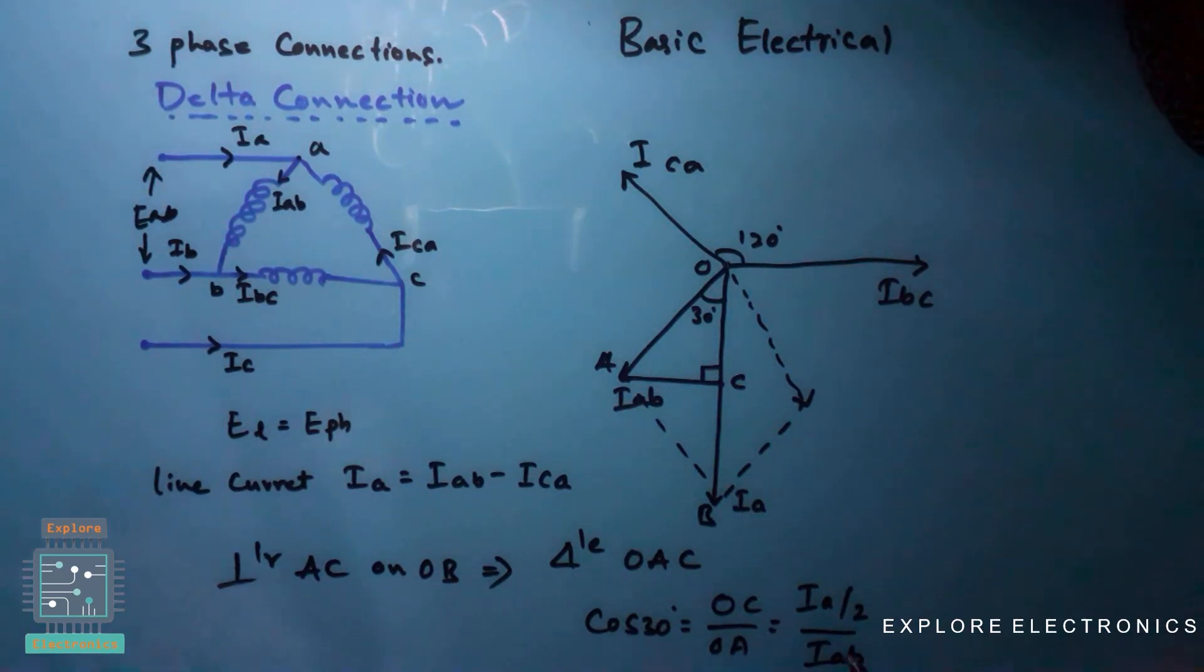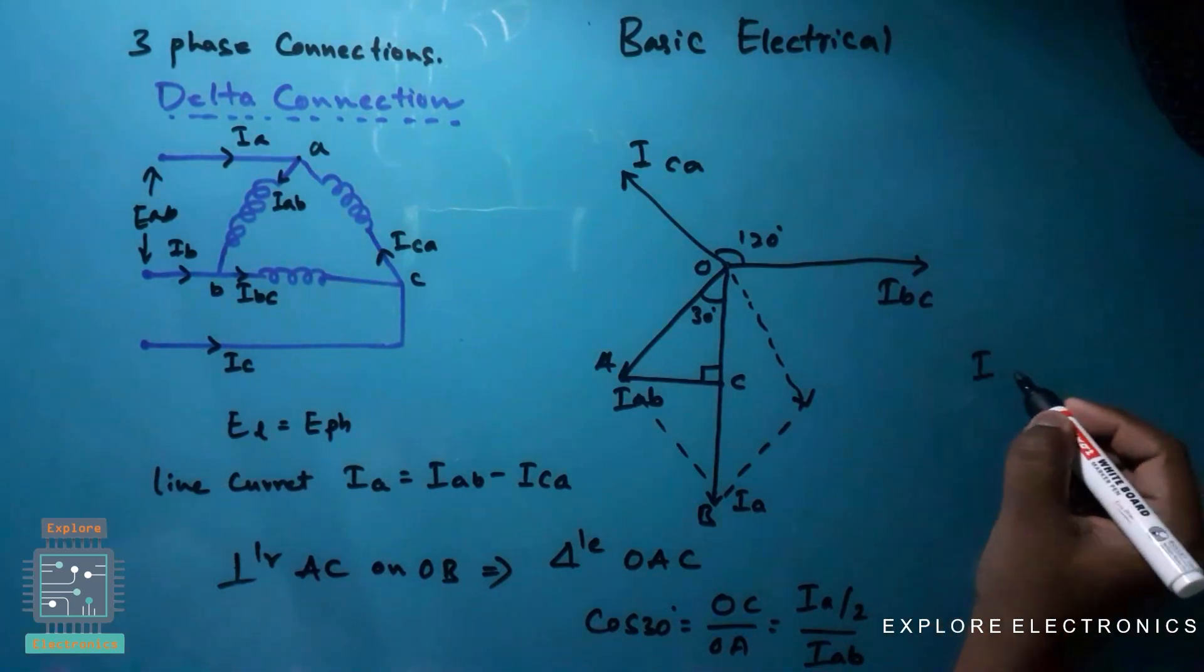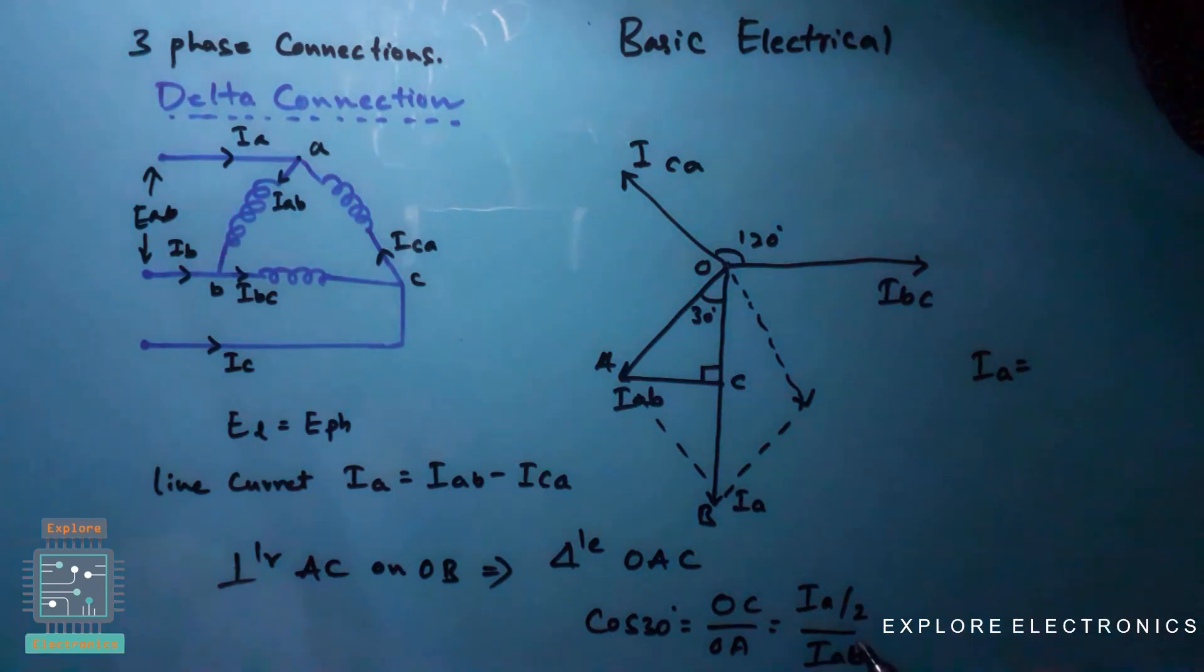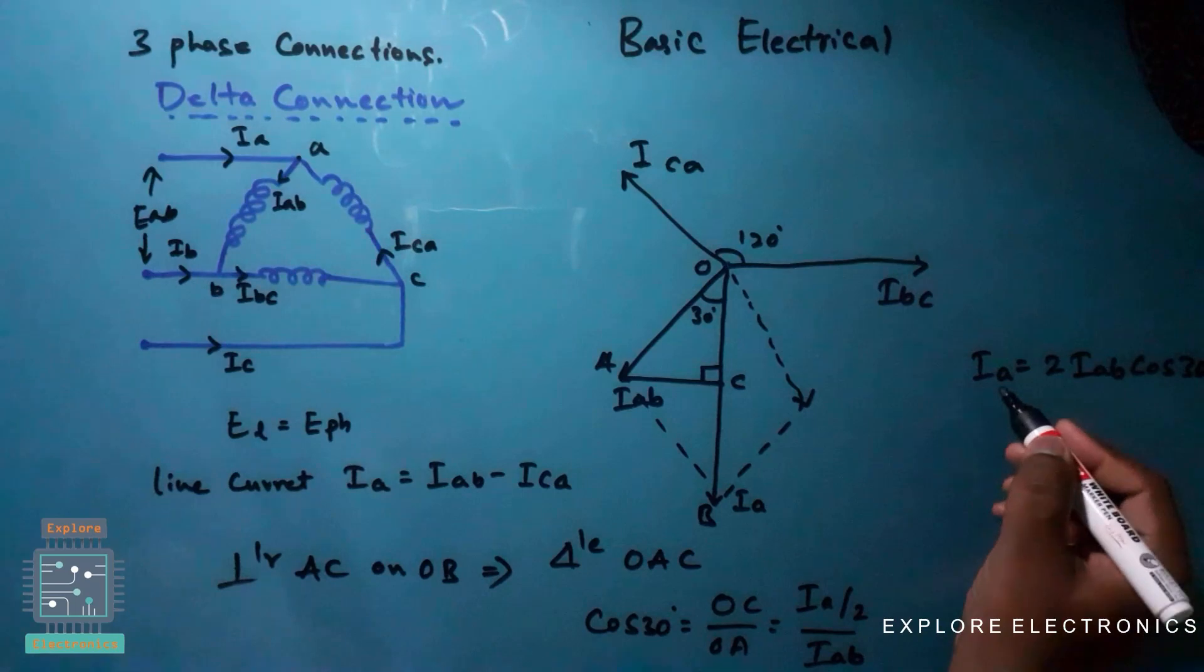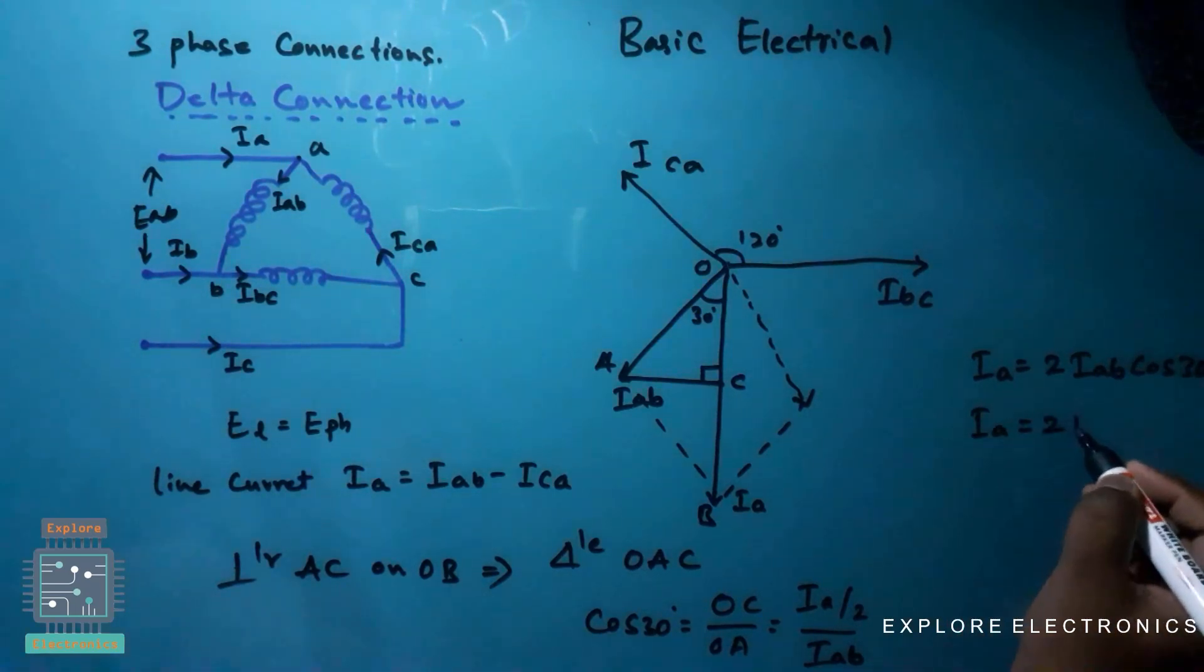Right, now I am going to write the expression here from this as Ia is equal to 2 times Iab into cos 30. This is what I am going to get for Ia. Just I am multiplying Iab with cos 30, and in the denominator I have 2, I am multiplying this with this, so I am going to get the expression for Ia.